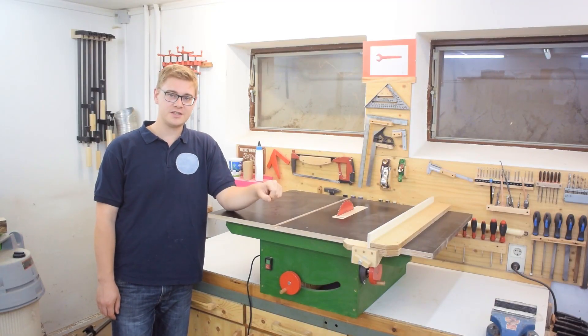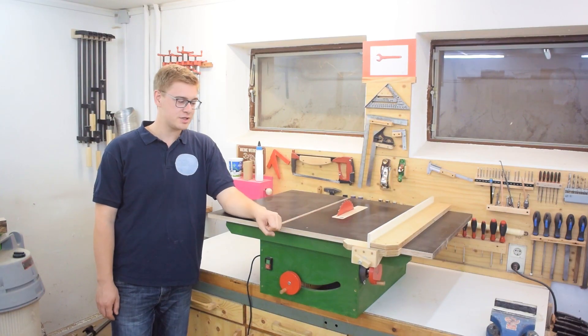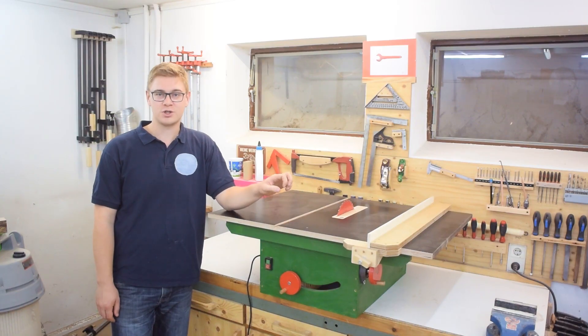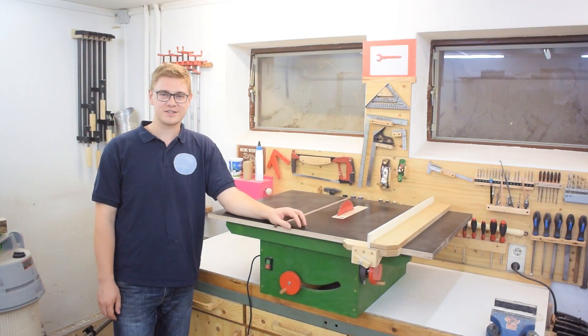So this is gonna be part two in my series on building my compact table saw. In the last episode I built the motor unit and the mechanism for raising and lowering the blade, and in this one I'm gonna show you how I made the tilt mechanism that utilizes wooden trunnions.